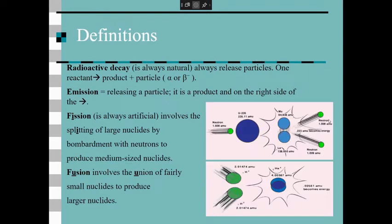Let's go over a few definitions. Radioactive decay is a natural decay or release of particles. You can identify it because it always has one reactant and more than one product. When we say releasing a particle, the word we're referring to is emission — it is a product on the right-hand side of the yield sign. If it were a reactant, it would be called a projectile being shot at it.